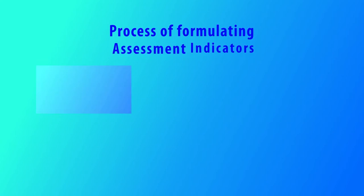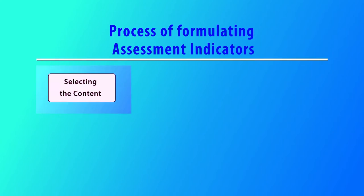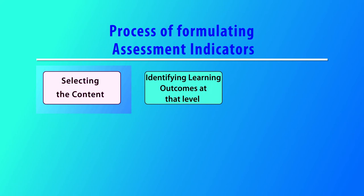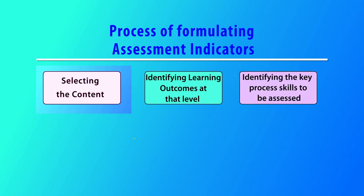So what do we need to do? We need to find out a skill which we want to assess, then we need to find out the indicators through which acquiring of that skill can be assessed. How do we formulate the assessment indicators? It is a process. First, we decide the content — for which content we are going to do the assessment.